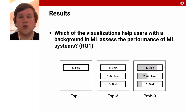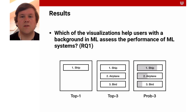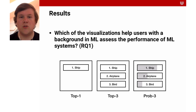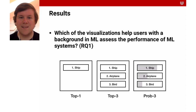The first research question was which of the visualizations helped users with a background in machine learning assess the performance of machine learning systems. We found that all participants considered Prob Three to be the most helpful visualization. Top One and Top Three were never mentioned as the most helpful, and Top One was considered to be the least helpful visualization by 66% of the participants.